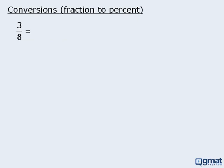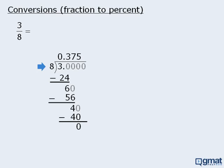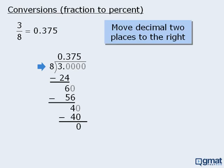Now let's learn how to convert a fraction to a percent. To convert three-eighths to a percent, we can first convert three-eighths to a decimal, and then convert that decimal to a percent. We convert three-eighths to a decimal by dividing 8 into 3 to get 0.375. From here we convert 0.375 to a percent by moving the decimal two spaces to the right to get 37.5%.